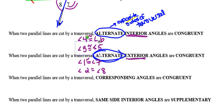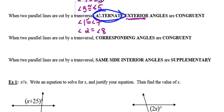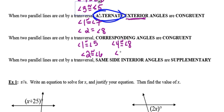So for corresponding angles, I actually have four different pairs: angle one and angle five, angle two and six, angles four and eight, and the last pair, angles three and seven.